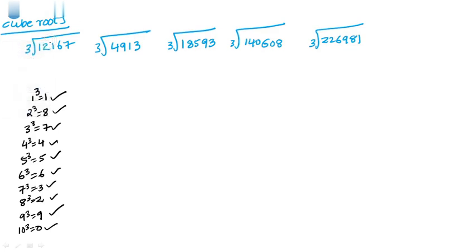Separate the last two (three) places. After that, 7 and 7 — possibilities: if units place is 7, then the answer is 3. If possibilities are 3 and 7, then it should be 3. This makes cube roots very easy.